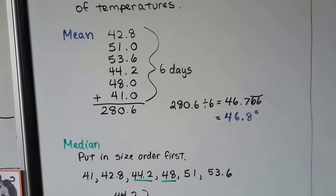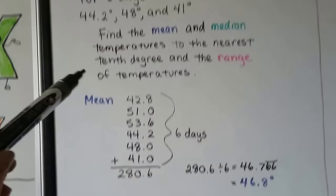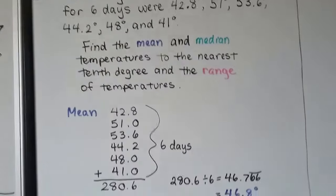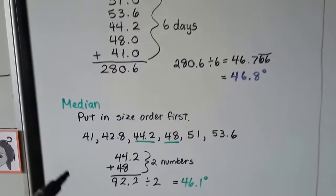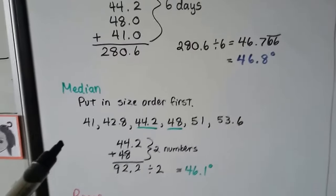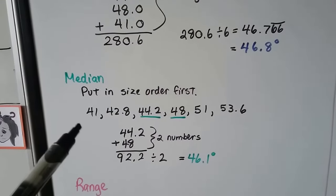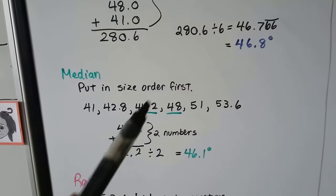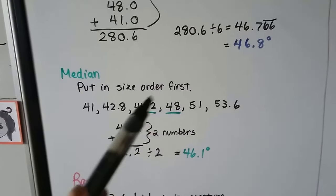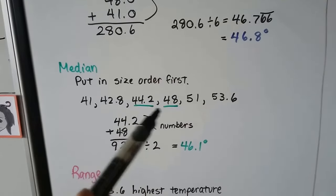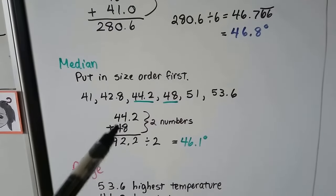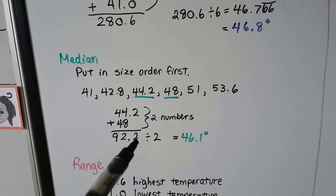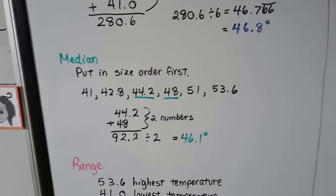The median, we put them in size order first, because if you look, we've got a 41 degree way back here and a 51 degree in the middle. They're not in size order. So it doesn't matter if it's least to greatest or greatest to least. We put them in size order, whichever way, and we have six numbers. So we have two middle numbers. So in order to find the median, we have to find the average of these two numbers. So we add them and divide them by two, because that's how many numbers we added together.